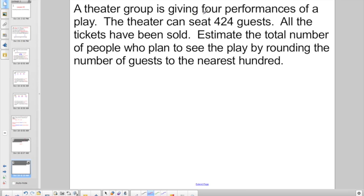A theater group is giving four performances. Sometimes they give you numbers, sometimes they're going to spell out the word. The theater can seat 424 guests. All the tickets have been sold. 424 guests a night for four nights, four performances. They want you to estimate the total number of people who plan to see the play by rounding the number of guests to the nearest hundred. So four is in the hundreds. Look at the neighbor to the right. He's less than five, he's only a two. So 424 rounds to 400.